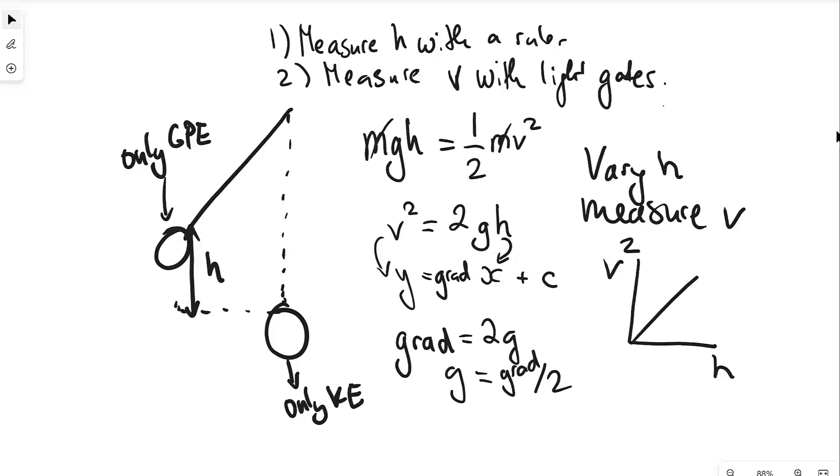Now how do we do this experiment accurately? First of all the angle has to be smaller than 10 degrees in order to ensure that this is actually performing simple harmonic motion, so theta must be less than 10 degrees. And additionally we'll take multiple readings and then we're going to be averaging.